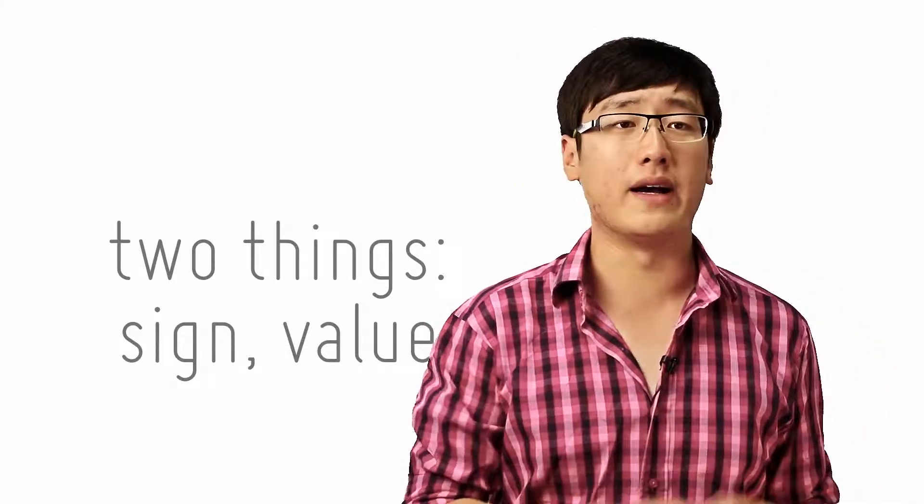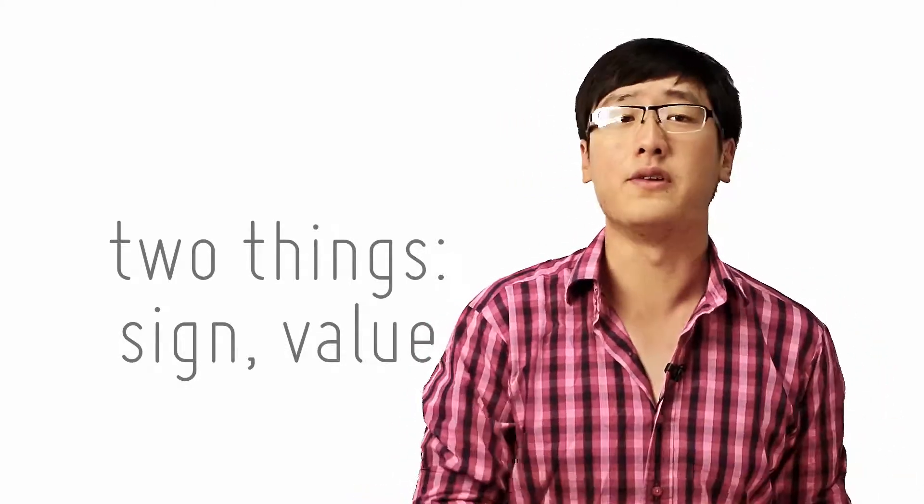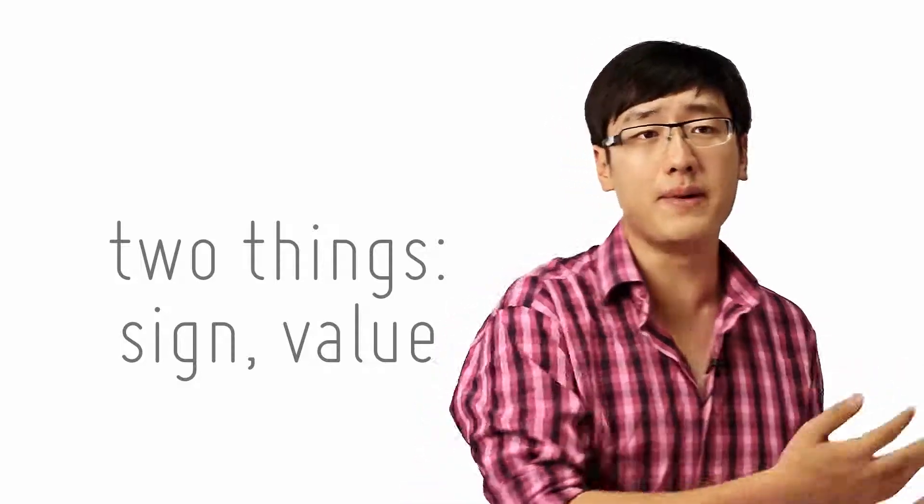There are two things to look out for when you talk about elasticity: the sign and the value. Elasticity comes as a number, so let's start with the sign.